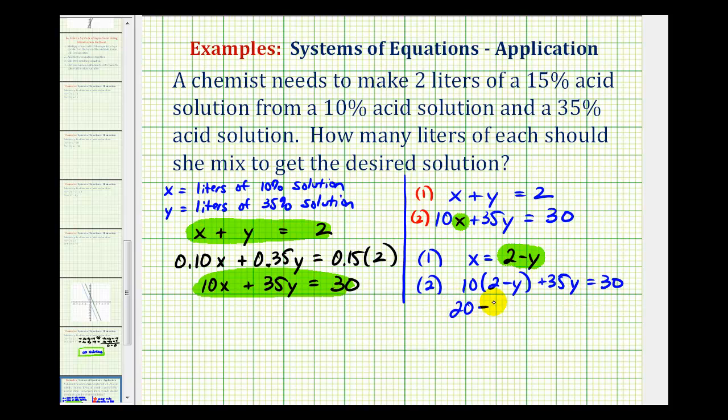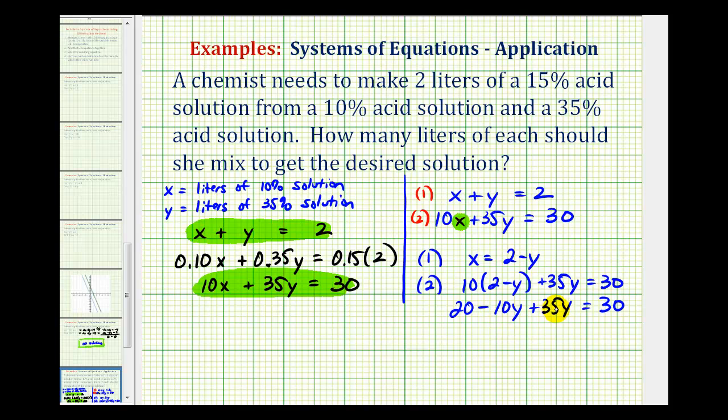We have 20 minus 10y plus 35y equals 30. Here we have two y terms, so we can combine these terms. Negative 10y plus 35y is 25y, so we'll have 20 plus 25y equals 30. Subtracting 20 on both sides gives us 25y equals 10.